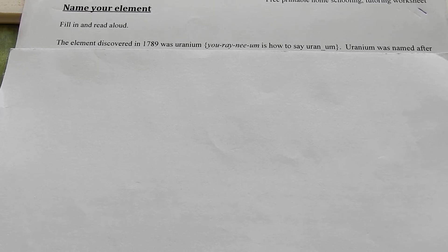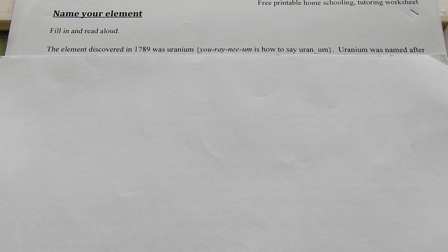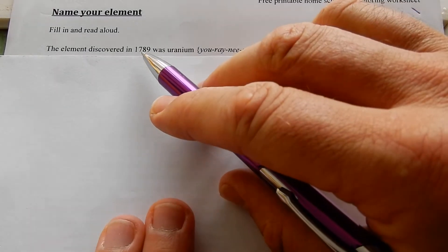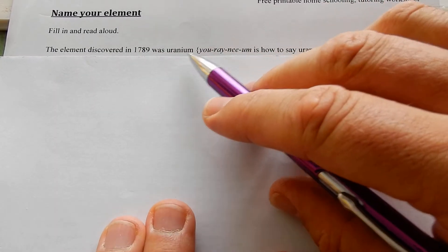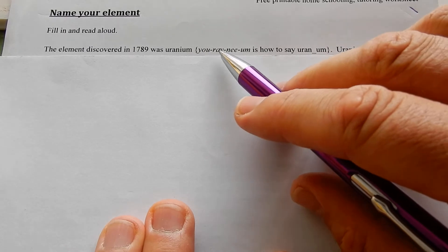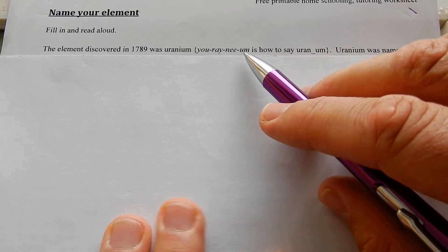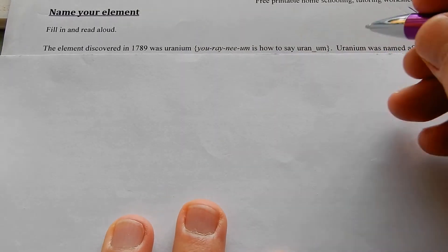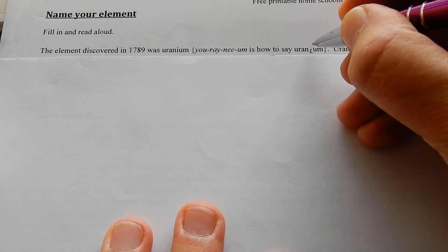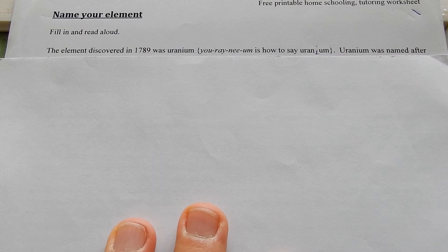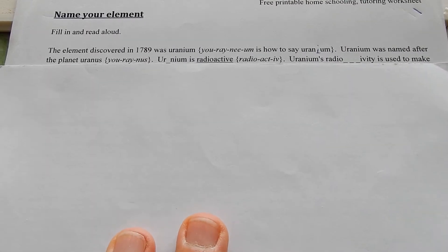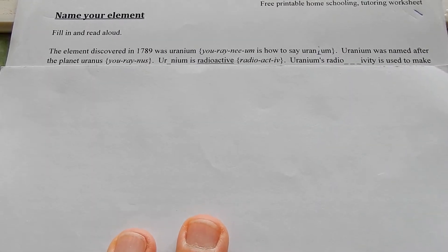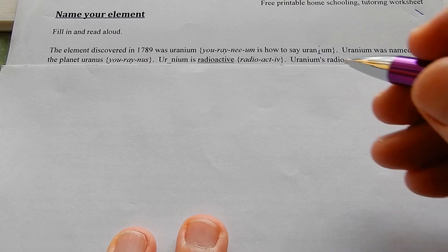Name your element. The element discovered in 1789 was Uranium. Uranium was named after the planet Uranus.